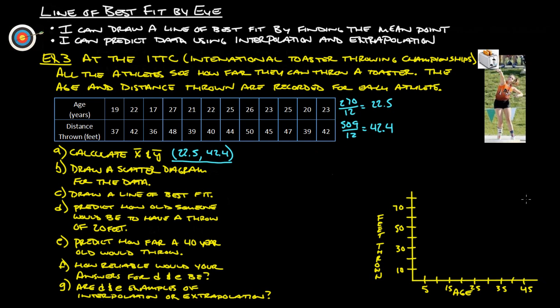Draw a scatter diagram for the data. We're going to graph all these data points here, and also graph our mean point. Start with the first one: (19, 37). The age is 19, here's 19, and then there's 37-ish. Roughly right there. We're going to go through and graph every point.